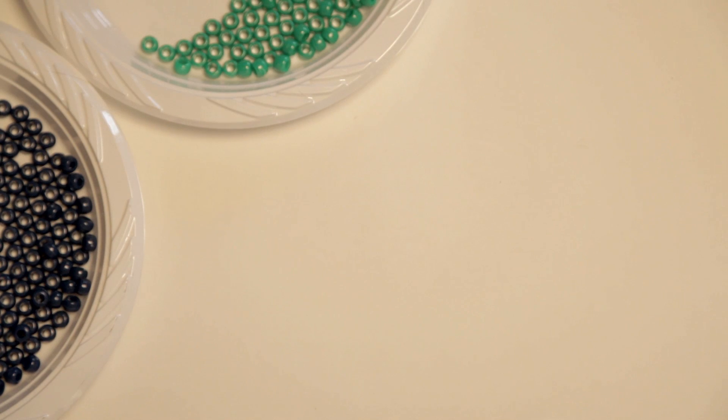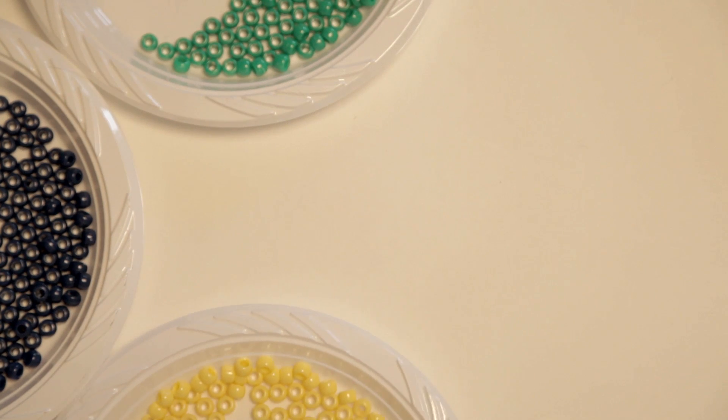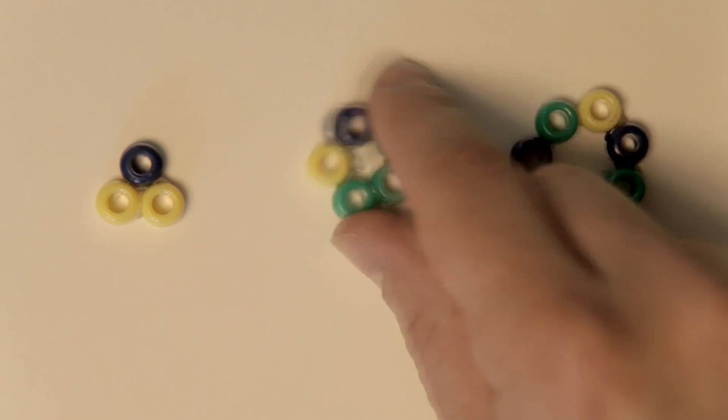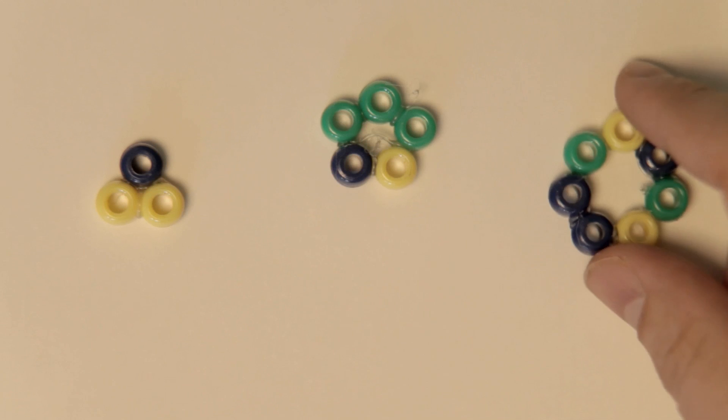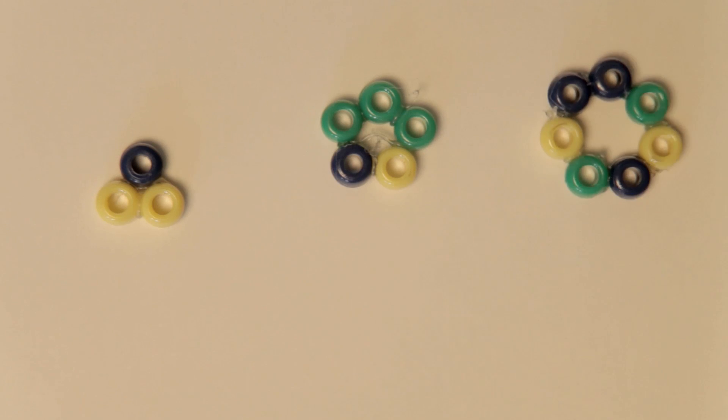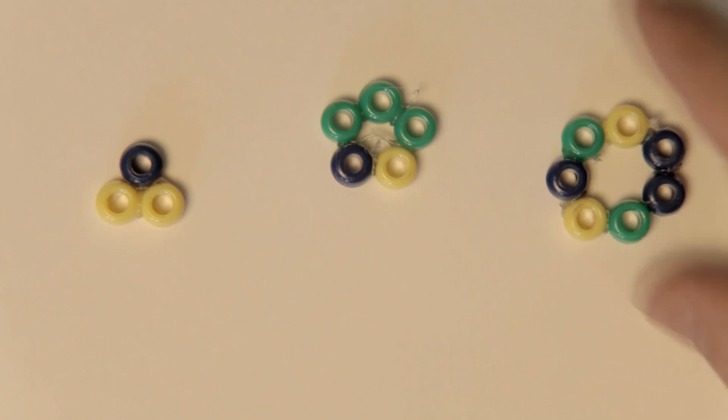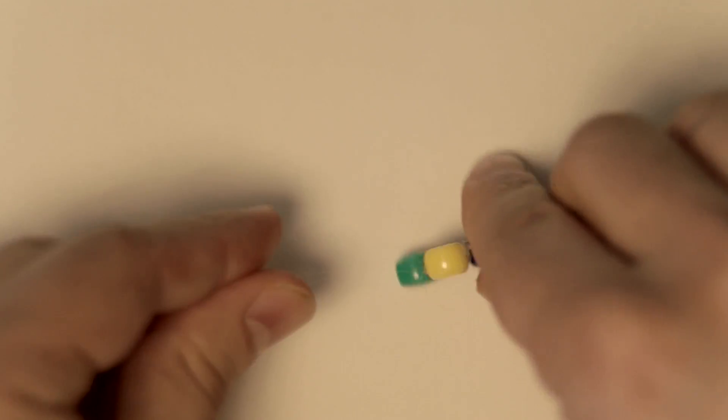But then he goes one step further. Currently, he is only using two colors, but he realizes this must hold with any number of colors. Because any multicolored earring with a prime number of beads, P, must have a cycle length of P, since primes cannot be broken into equal sized units.